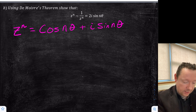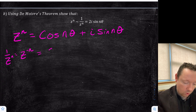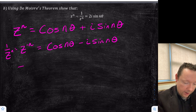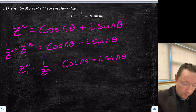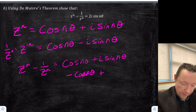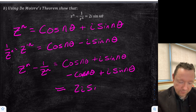And 1 over z^n is z to the minus n. We've just shown in part A that z^(−1) is cos θ − i sin θ, so z^(−n) is cos nθ − i sin nθ. So we can then say that z^n minus 1 over z^n equals (cos nθ + i sin nθ) take away (cos nθ − i sin nθ). Watch our minuses here — minus minus gives plus i sin nθ. You can clearly see that the cos nθ terms cancel, you've got two lots of i sin nθ, so you've got 2i sin nθ, as required.